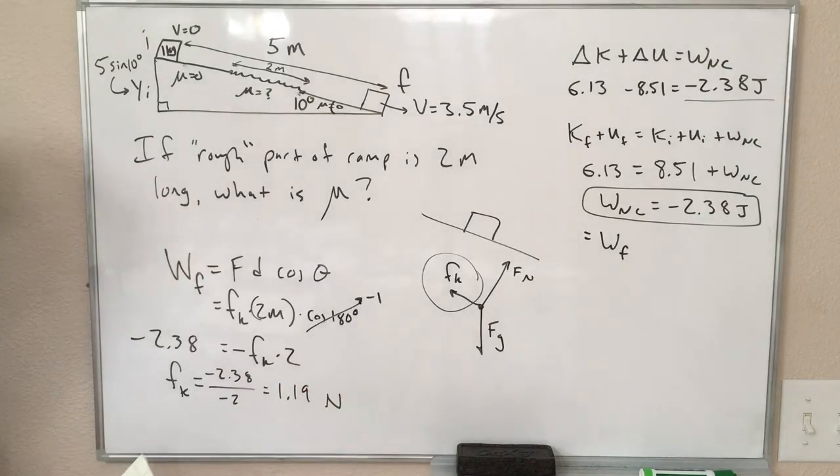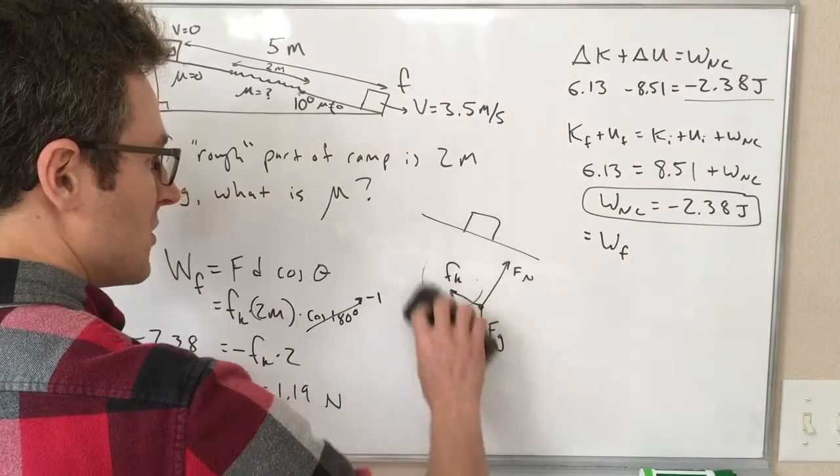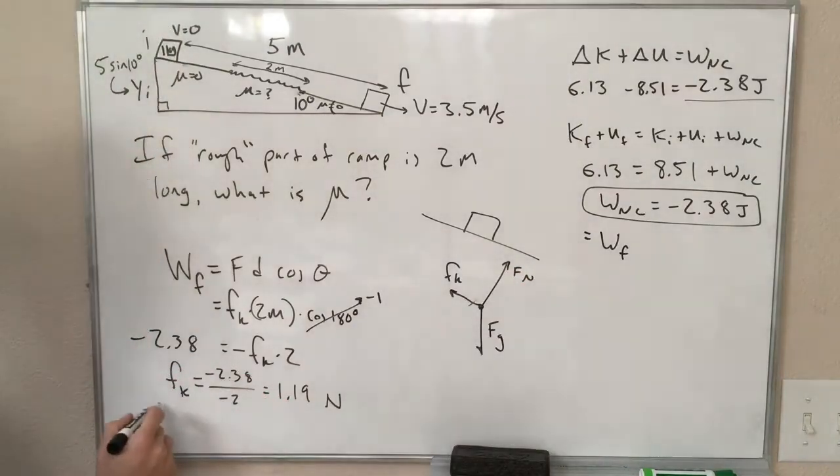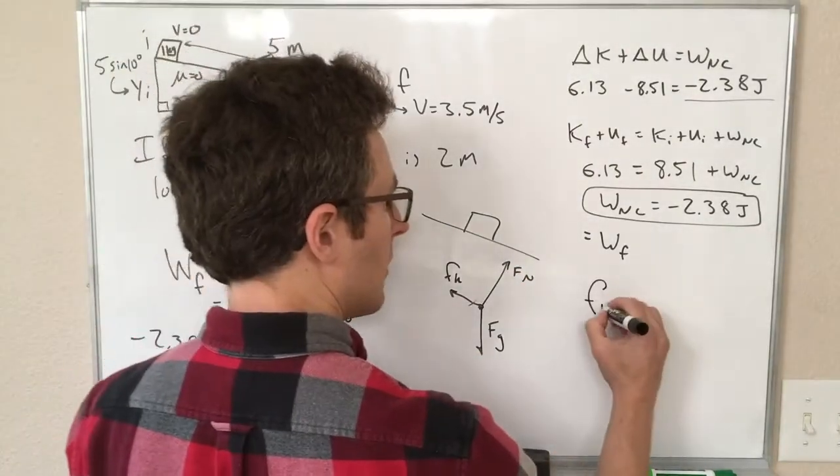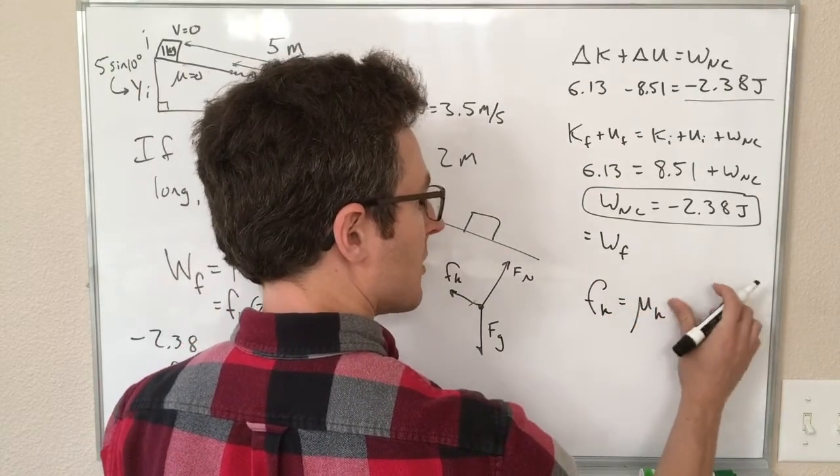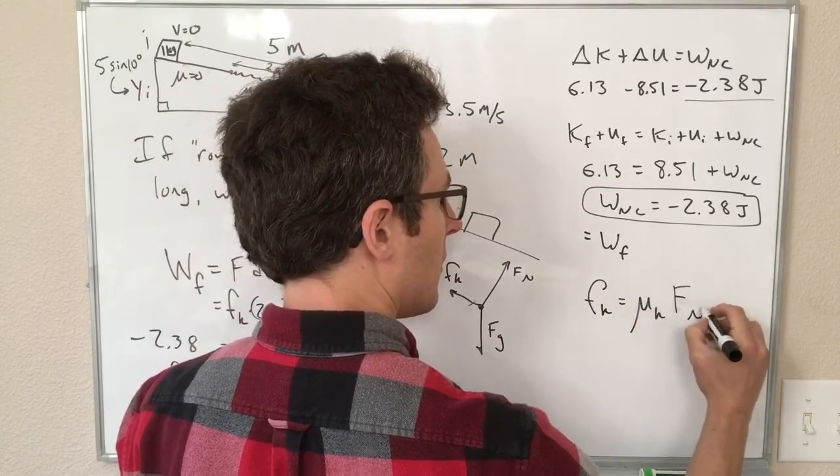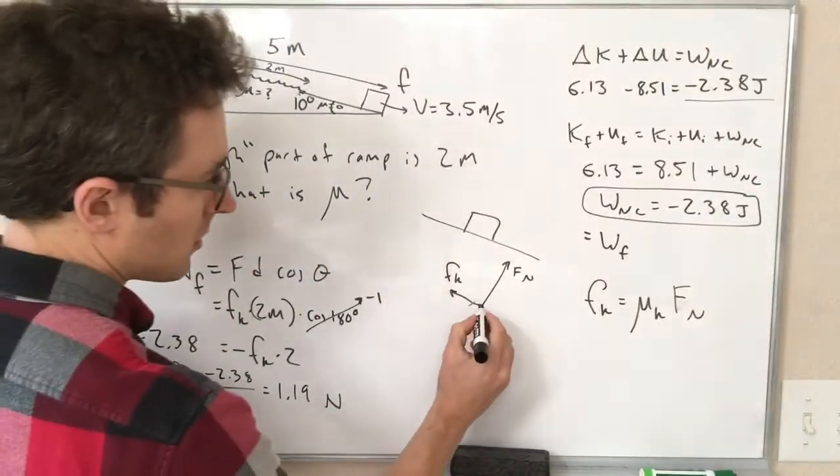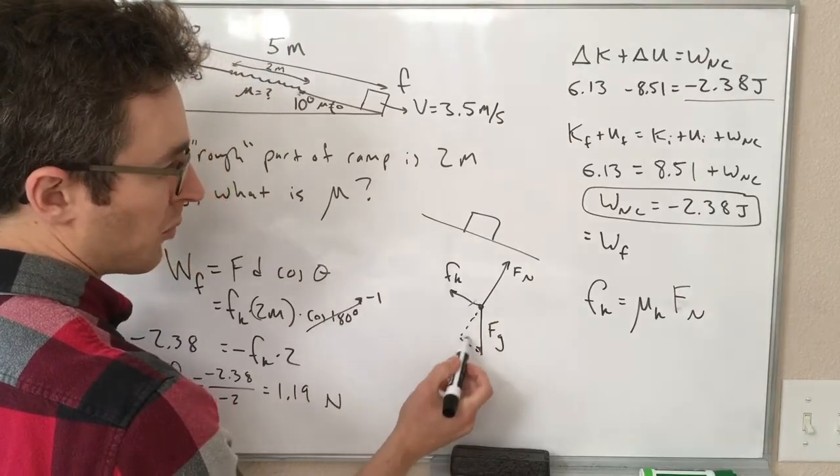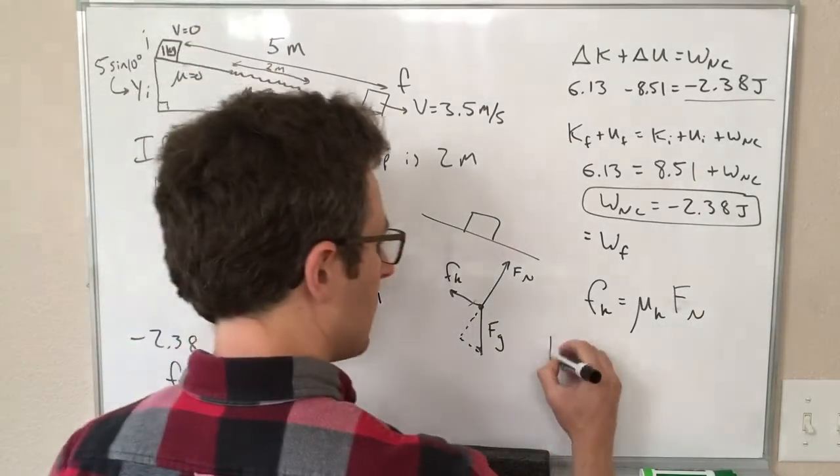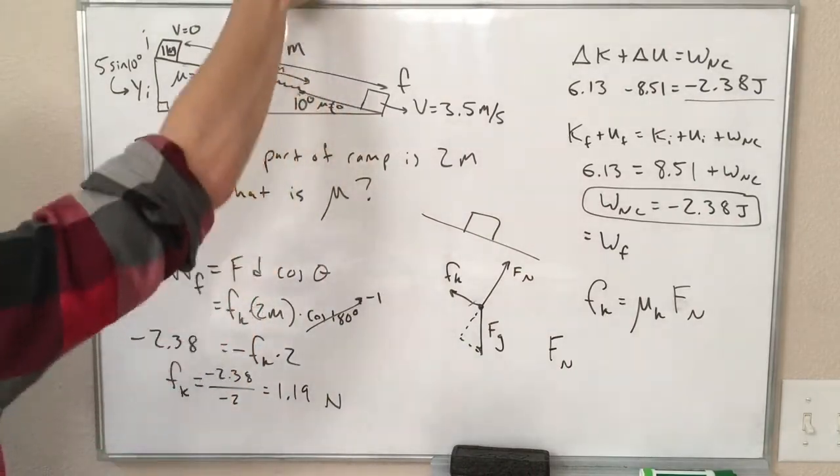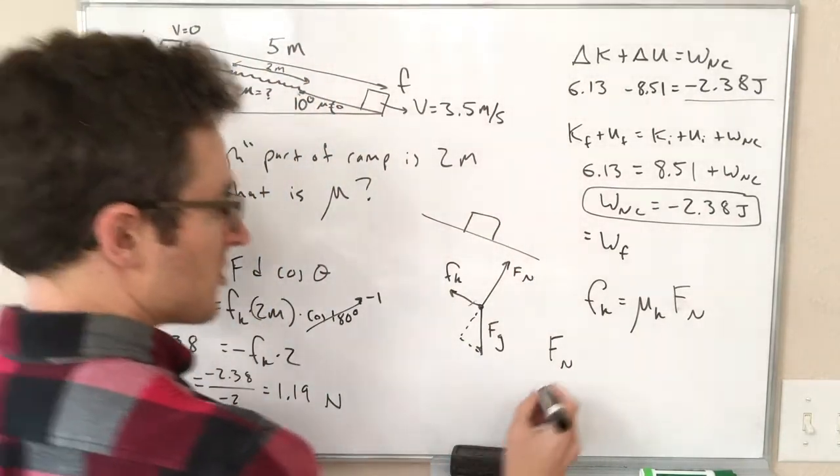Now we are in good shape to find this friction coefficient. So, we know that our kinetic friction, like our equation for kinetic friction, is the kinetic friction coefficient times the normal force. And we know that the normal force is equal to this perpendicular component of gravity, because the acceleration in this direction, perpendicular to the ramp, is zero.